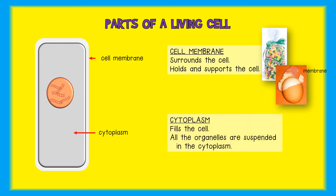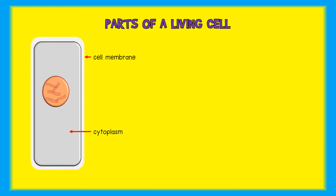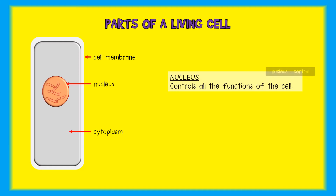The cytoplasm is inside the membrane. The cytoplasm is jelly-like, and all the parts or organelles of the cell are held or suspended in the cytoplasm. The central part of the cell is the nucleus. In living cells, the nucleus controls the functions of the cell such as nutrition and reproduction.